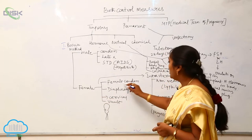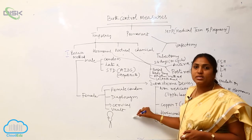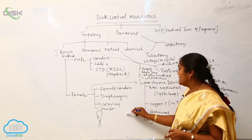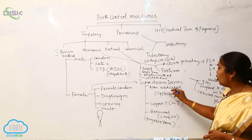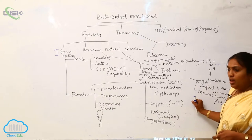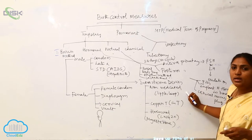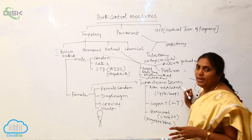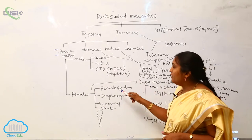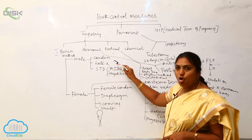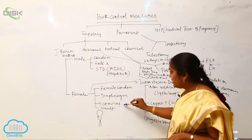In females, the barrier methods include female condoms, diaphragm, and cervical walls. These are the different types of barrier methods kept in females. Another important device is the intrauterine device. The non-medicated intrauterine devices are fixed inside the uterus of the female reproductive system.